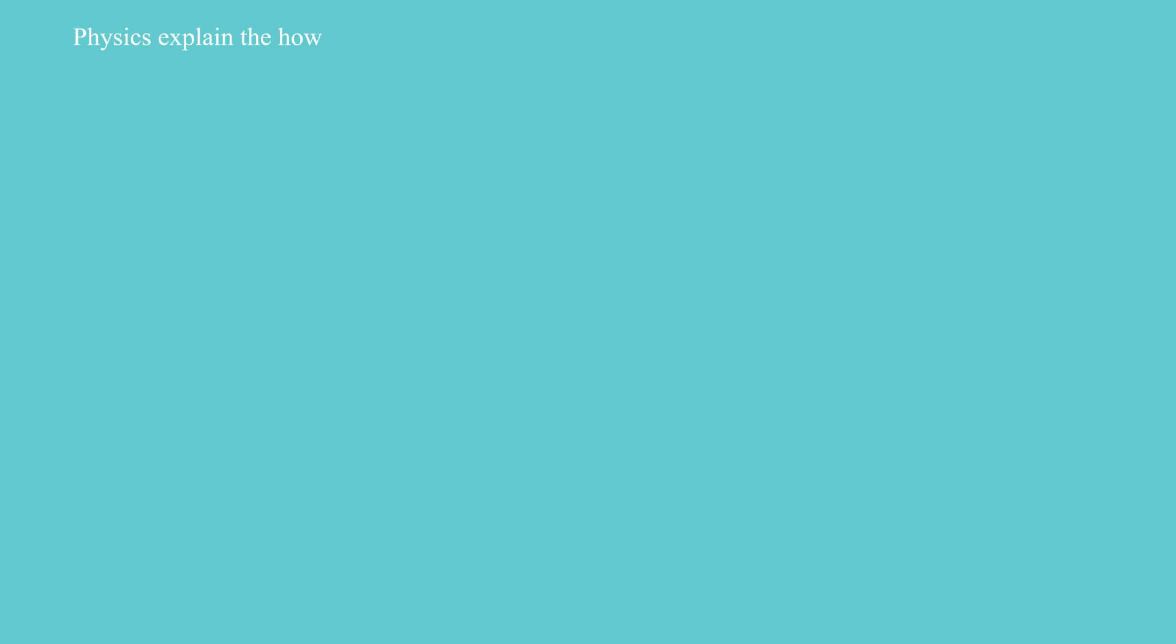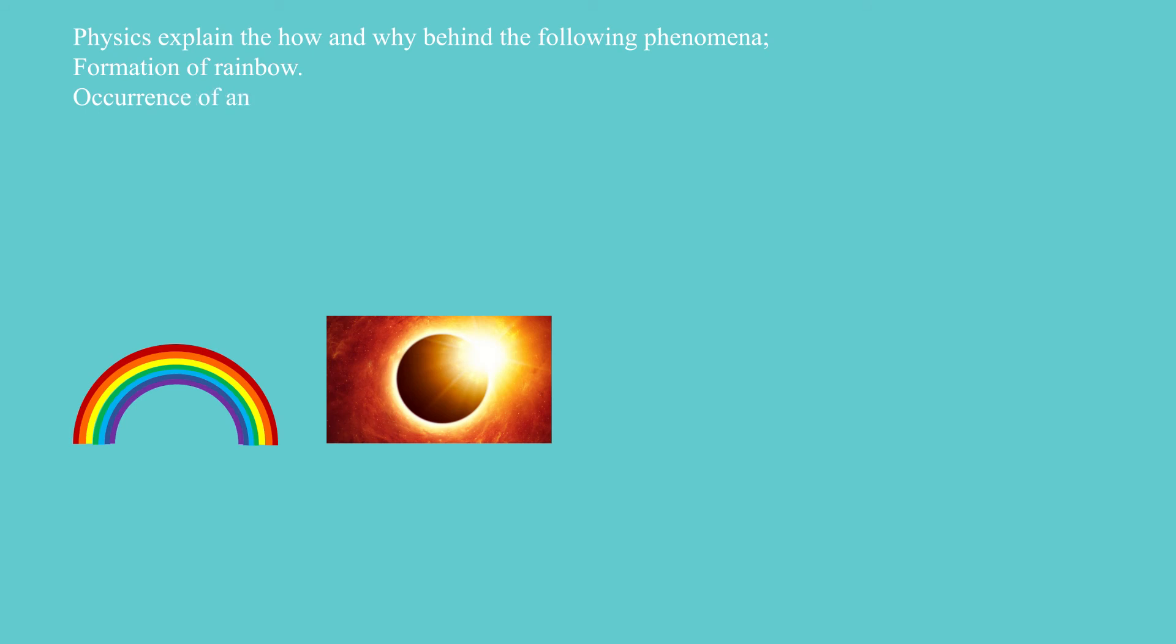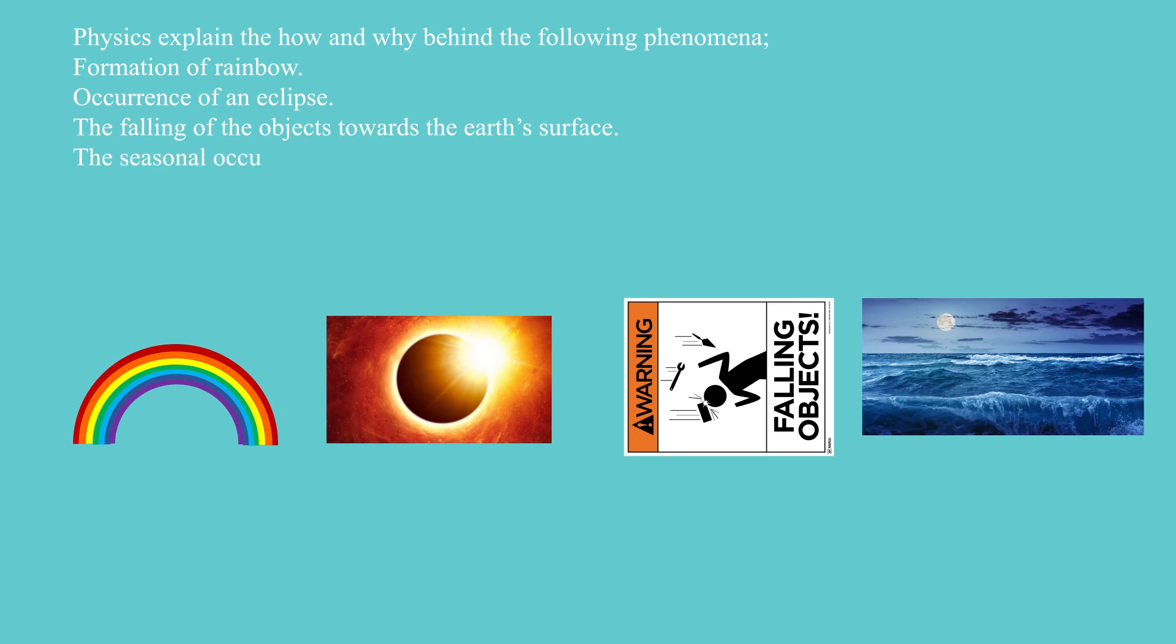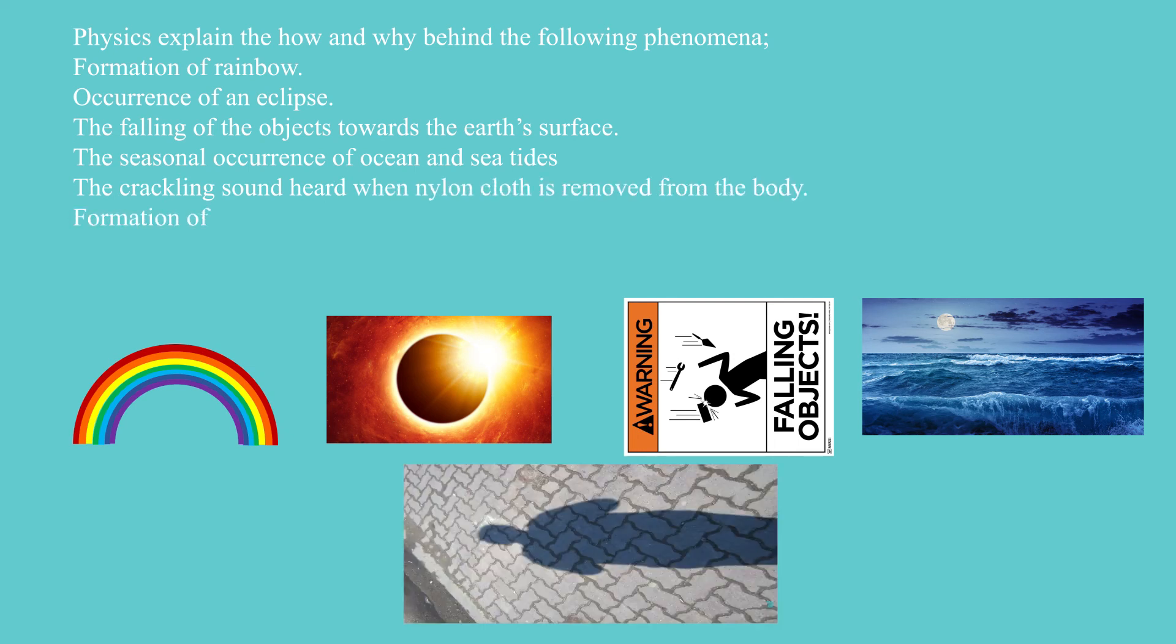Physics explains the how and why behind the following phenomena: formation of rainbow, occurrence of an eclipse, the falling of objects towards the Earth's surface, the seasonal occurrence of ocean and sea tides, the crackling sound heard when nylon cloth is removed from the body, formation of shadow, and many more.